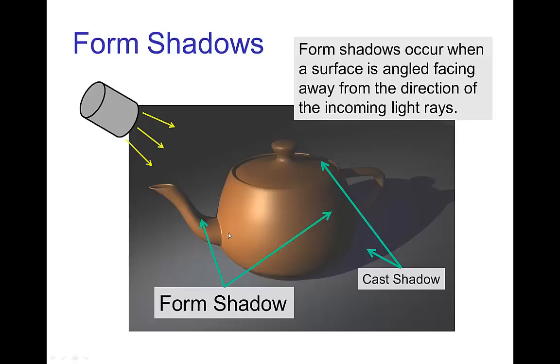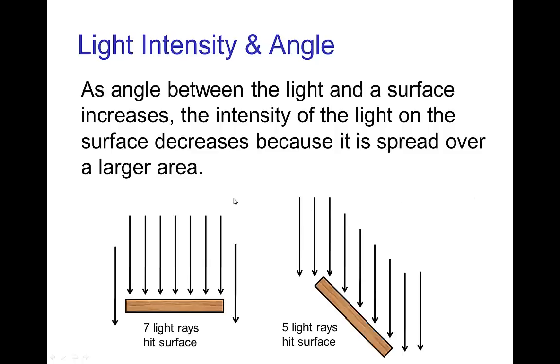Form shadow - an example here on the spout of the teapot and on the surface of the teapot behind it. These shadows form when a surface is angled facing away from the light source. And we know already that as a surface is tilted away from a light source, the illumination decreases on the surface basically because the light is spread over more area.